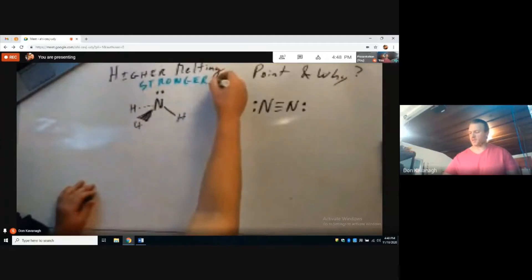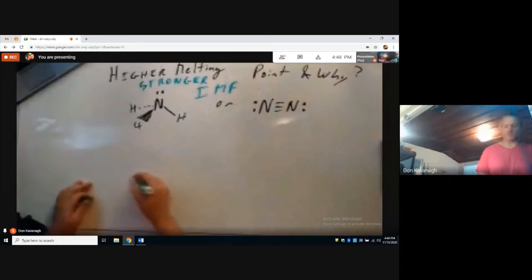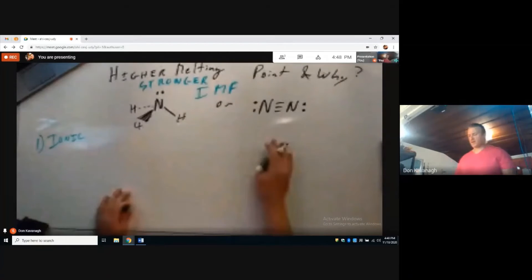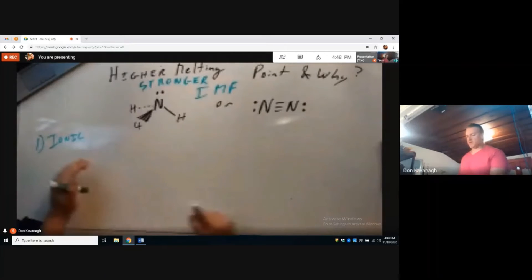An intermolecular force is often abbreviated IMF. One of the stronger intermolecular forces is ionic. If we have an ionic compound, we would determine that if one of these was ionic and the other wasn't ionic, we would say immediately, aha, the ionic compound has the stronger intermolecular force.